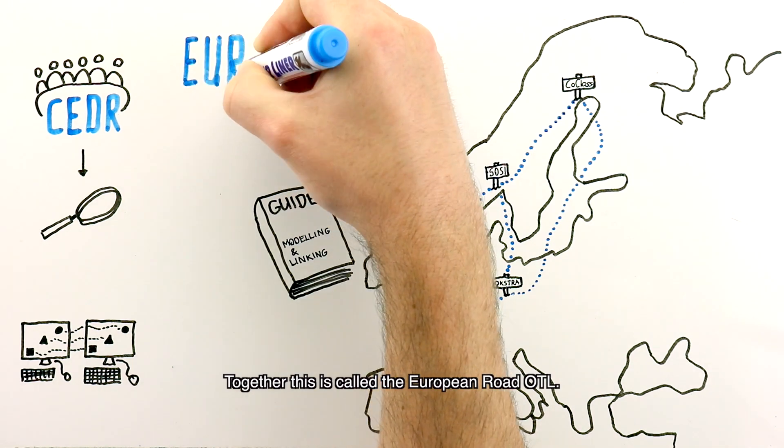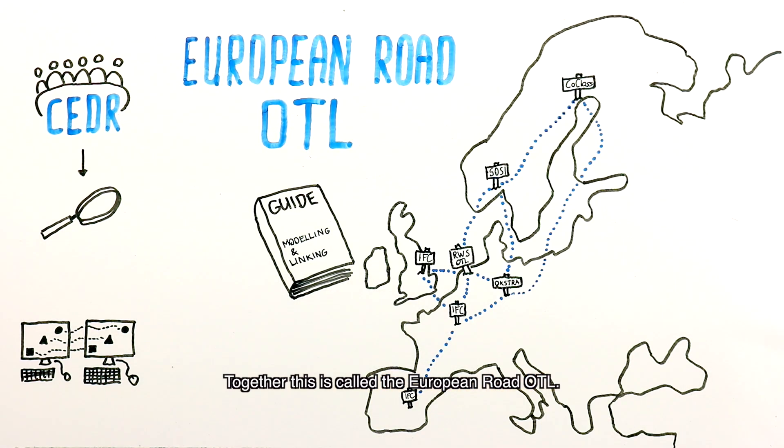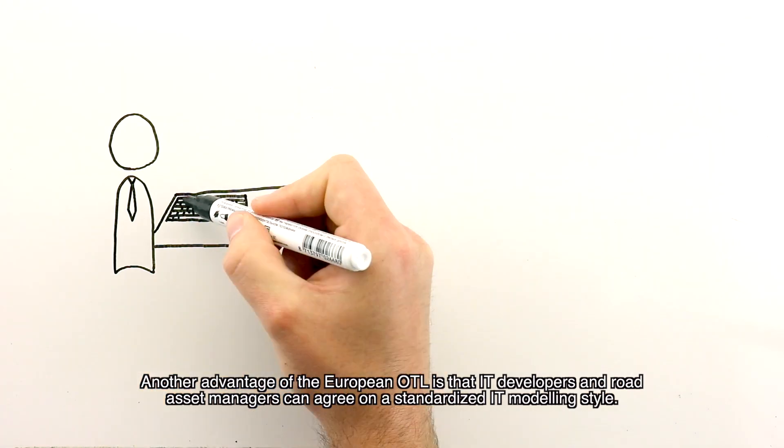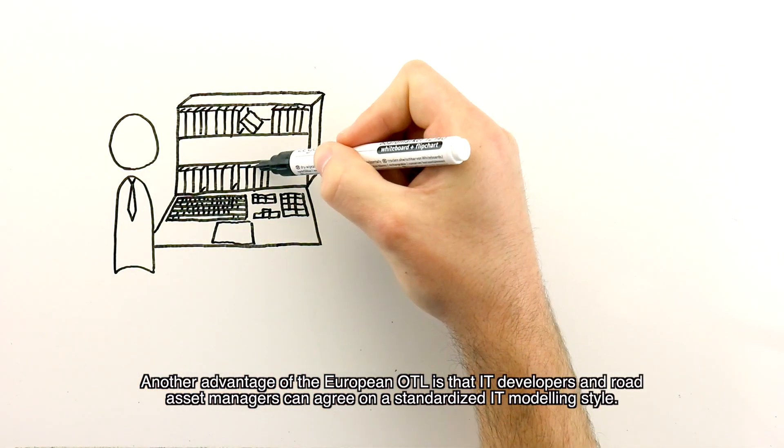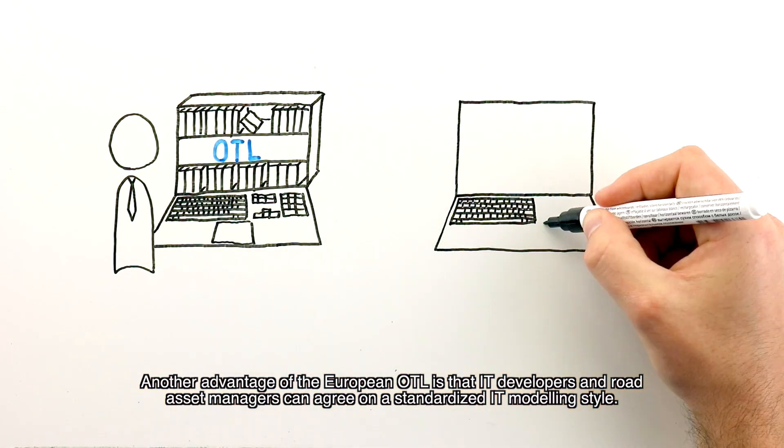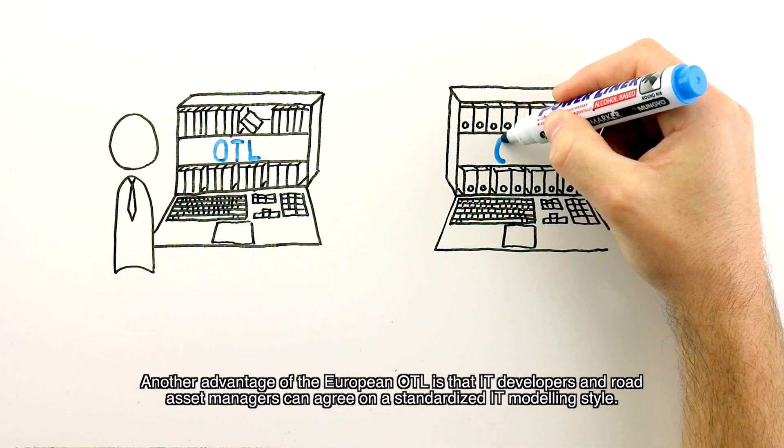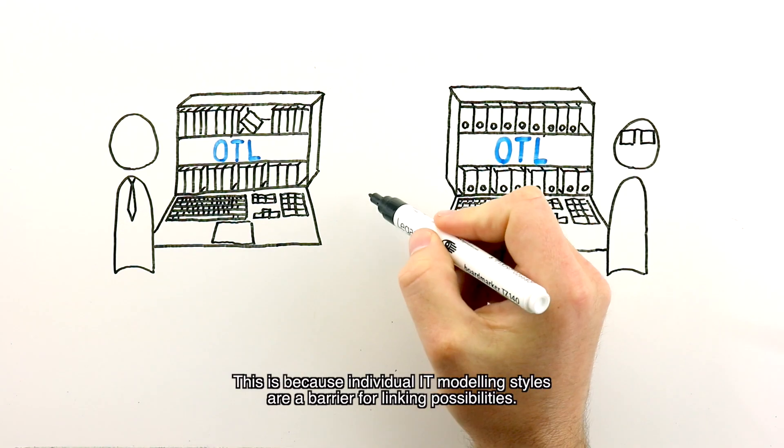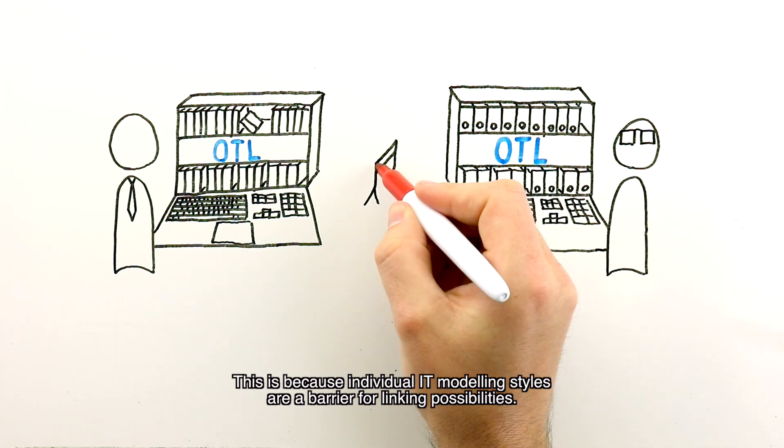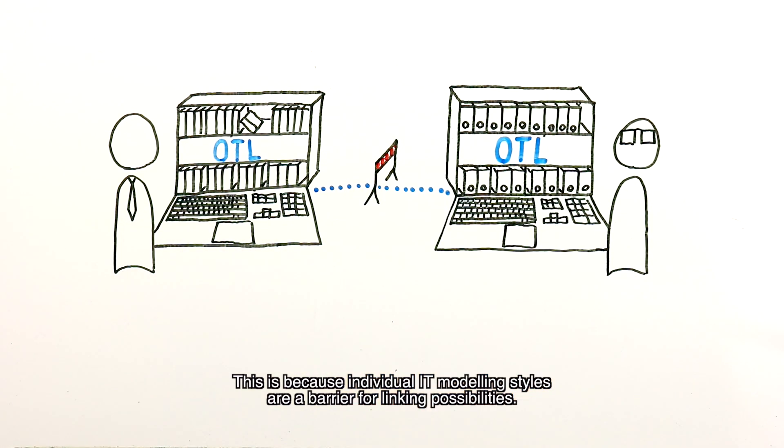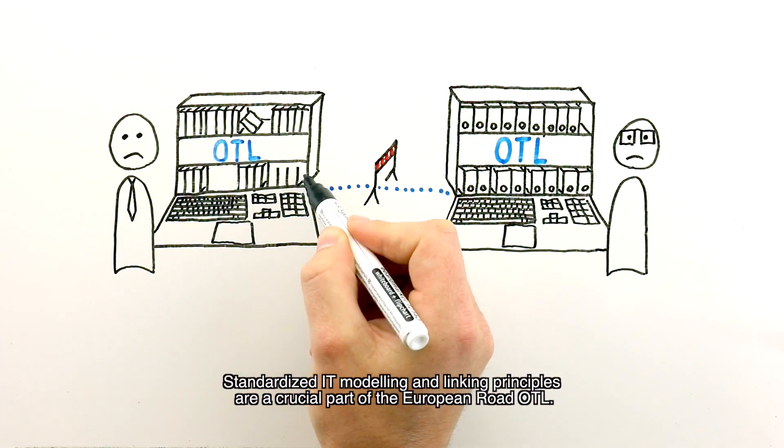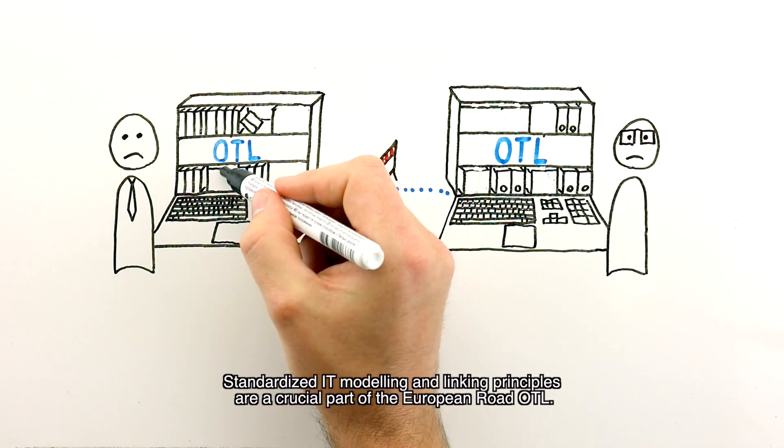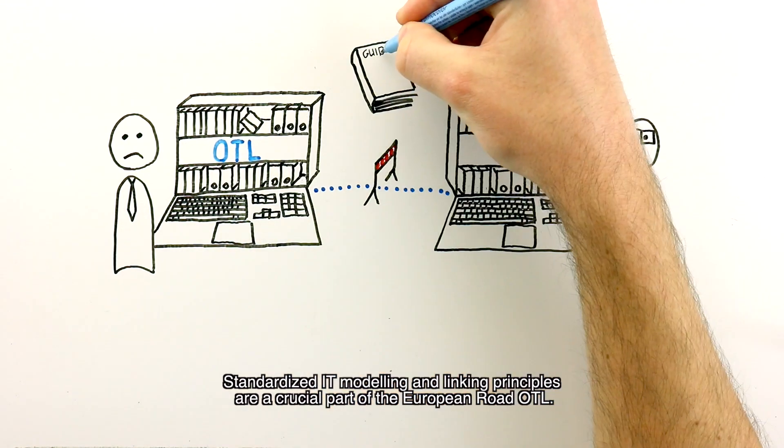Together, this is called the European Road OTL. Another advantage of the European OTL is that IT developers and road asset managers can agree on a standardized IT modeling style. This is because individual IT modeling styles are a barrier for linking possibilities. Standardized IT modeling and linking principles are a crucial part of the European Road OTL.